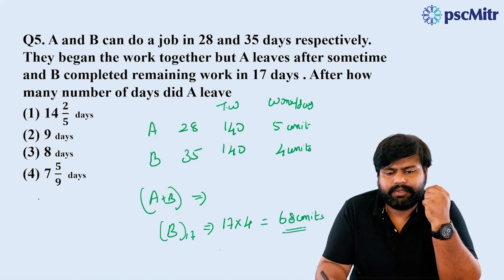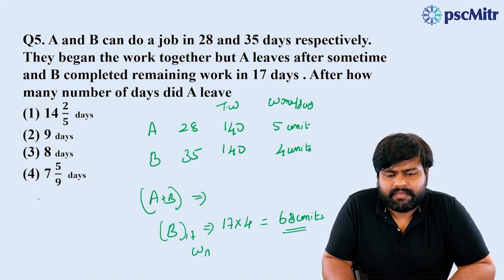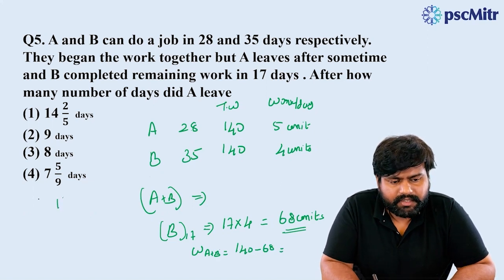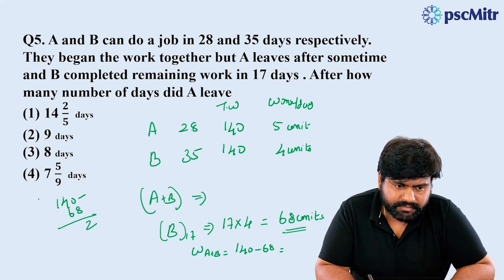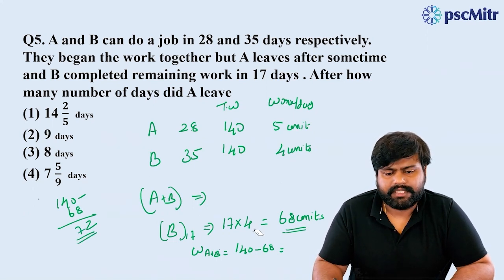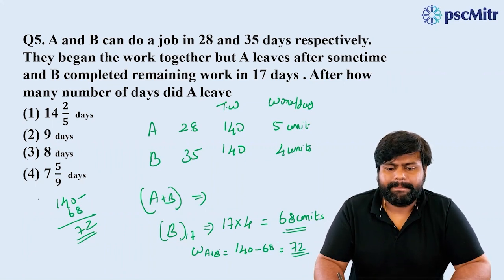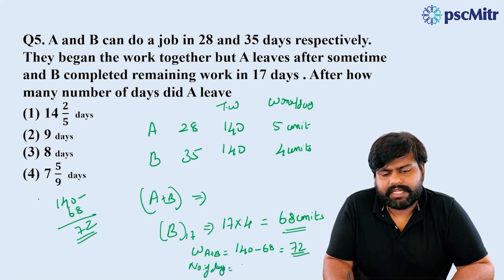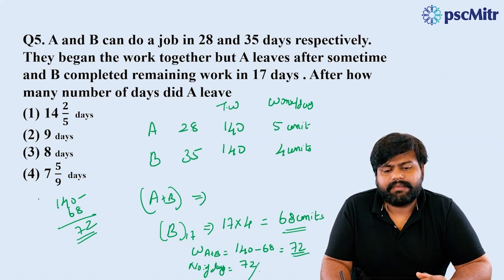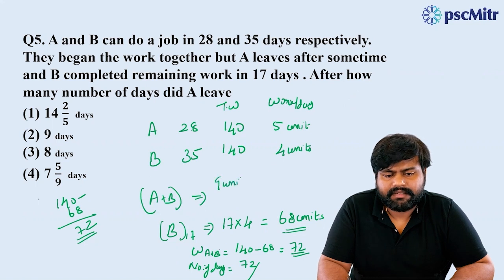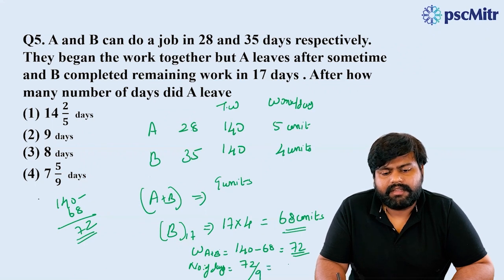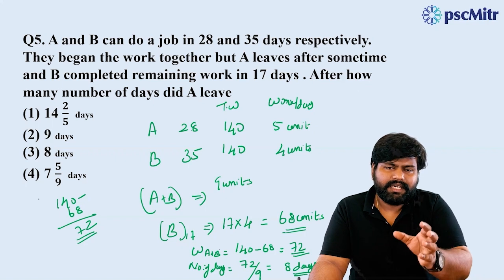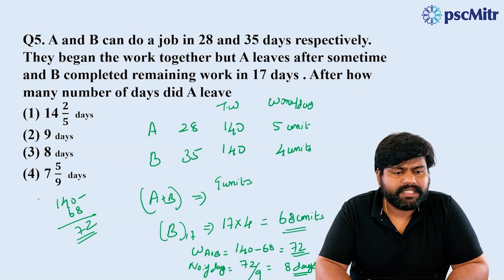46 units of work completed by A and B. 140 minus 48 gives remaining work of 72 units. Other than 72 units of work, A and B together do 9 units per day. Using the formula: 72 divided by 9 equals 8. After how many days did A leave? The answer is 8 days.